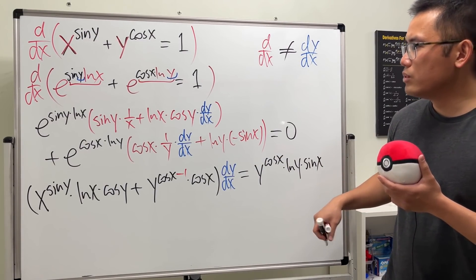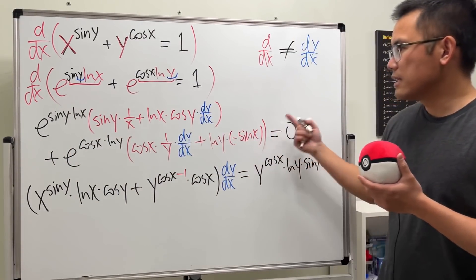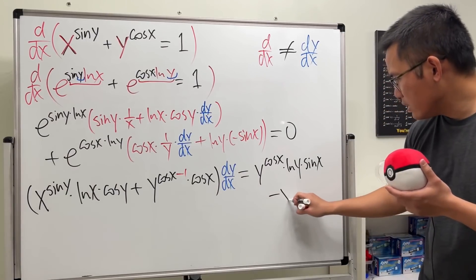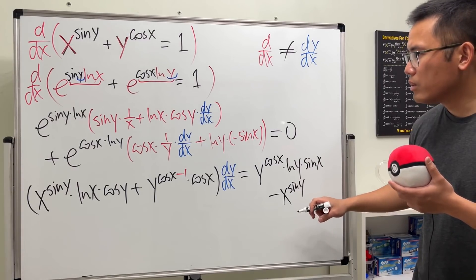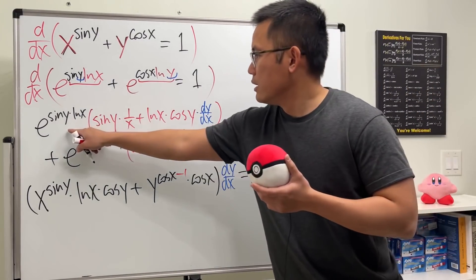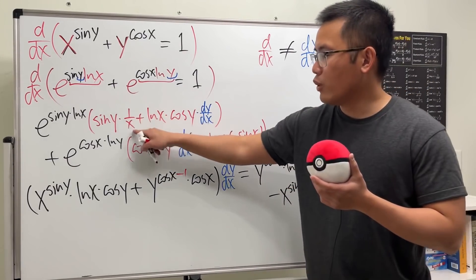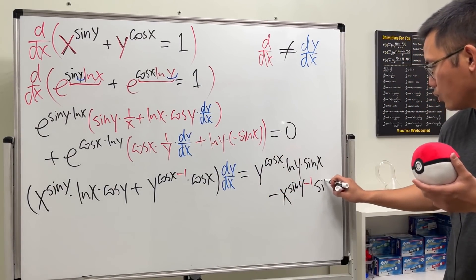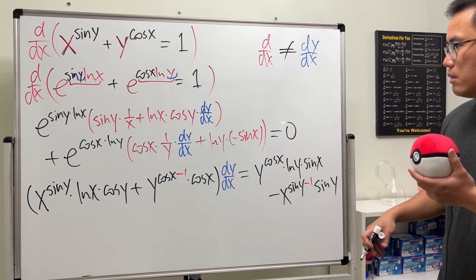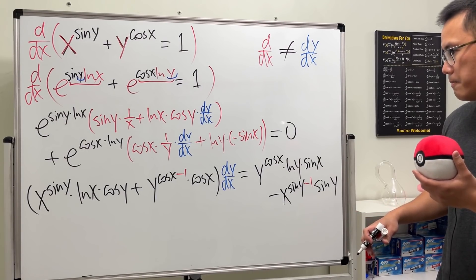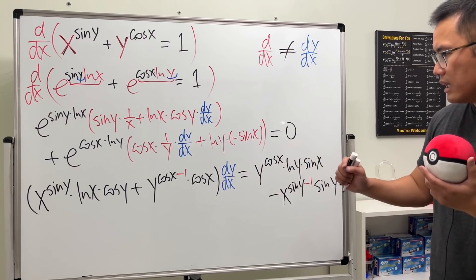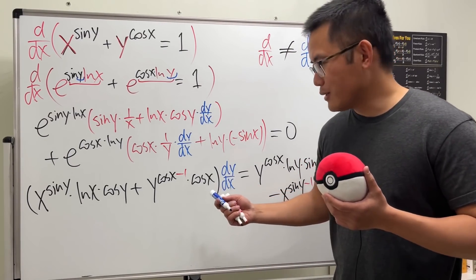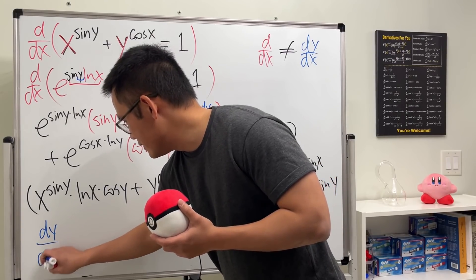Moving the non-dy/dx terms to the right side: the positive term is y^(cos x) · ln y · sine x, and we subtract the term involving x^(sin y) with (1/x), which simplifies to x^(sin y − 1) · sine y. So the right side is y^(cos x) · ln y · sin x minus x^(sin y − 1) · sin y.